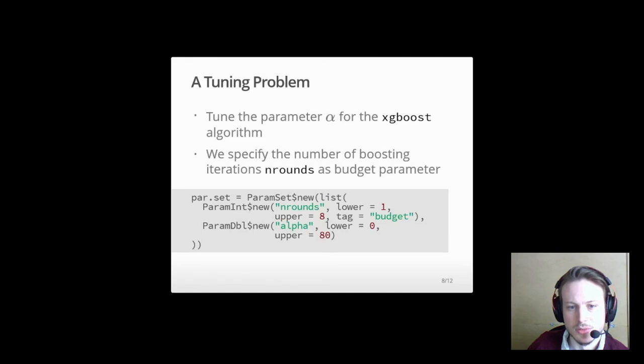Let's head over to a tuning problem we want to solve with our package. We want to tune the parameter alpha, responsible for the L1 regularization for the XGBoost algorithm. For this, we specify the number of boosting iterations and rounds as the budget parameter by adding the tag budget in the paradox parameter set definition.